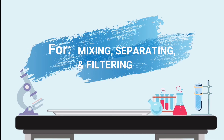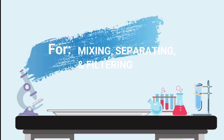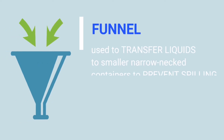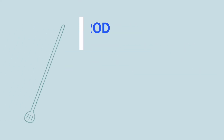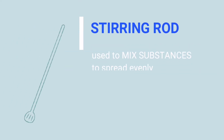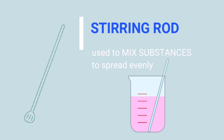Here are some tools for mixing, separating, and filtering. Funnel — it is used to transfer liquid to a smaller narrow neck container to prevent spilling. Stirring rod — it is used to mix substances to spread evenly.